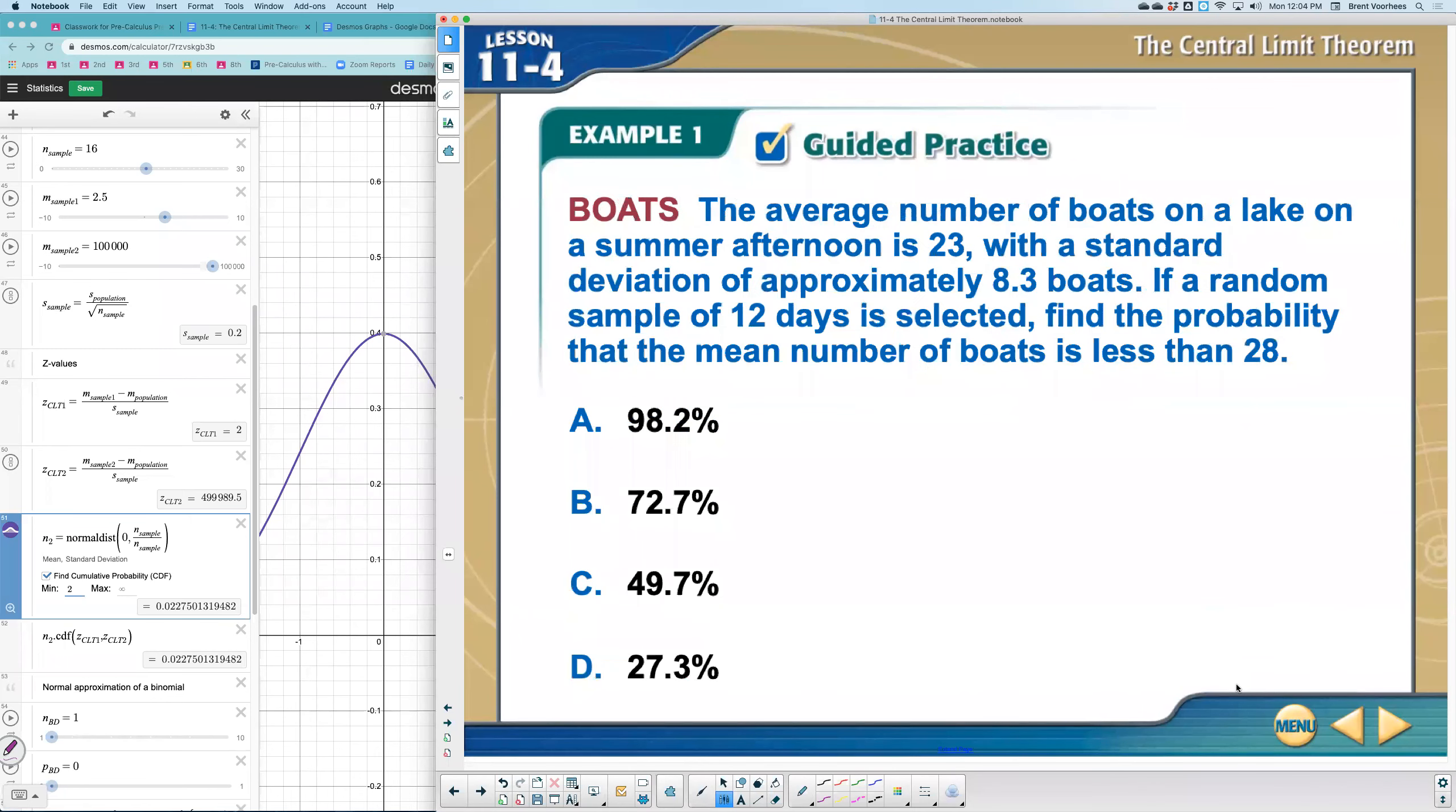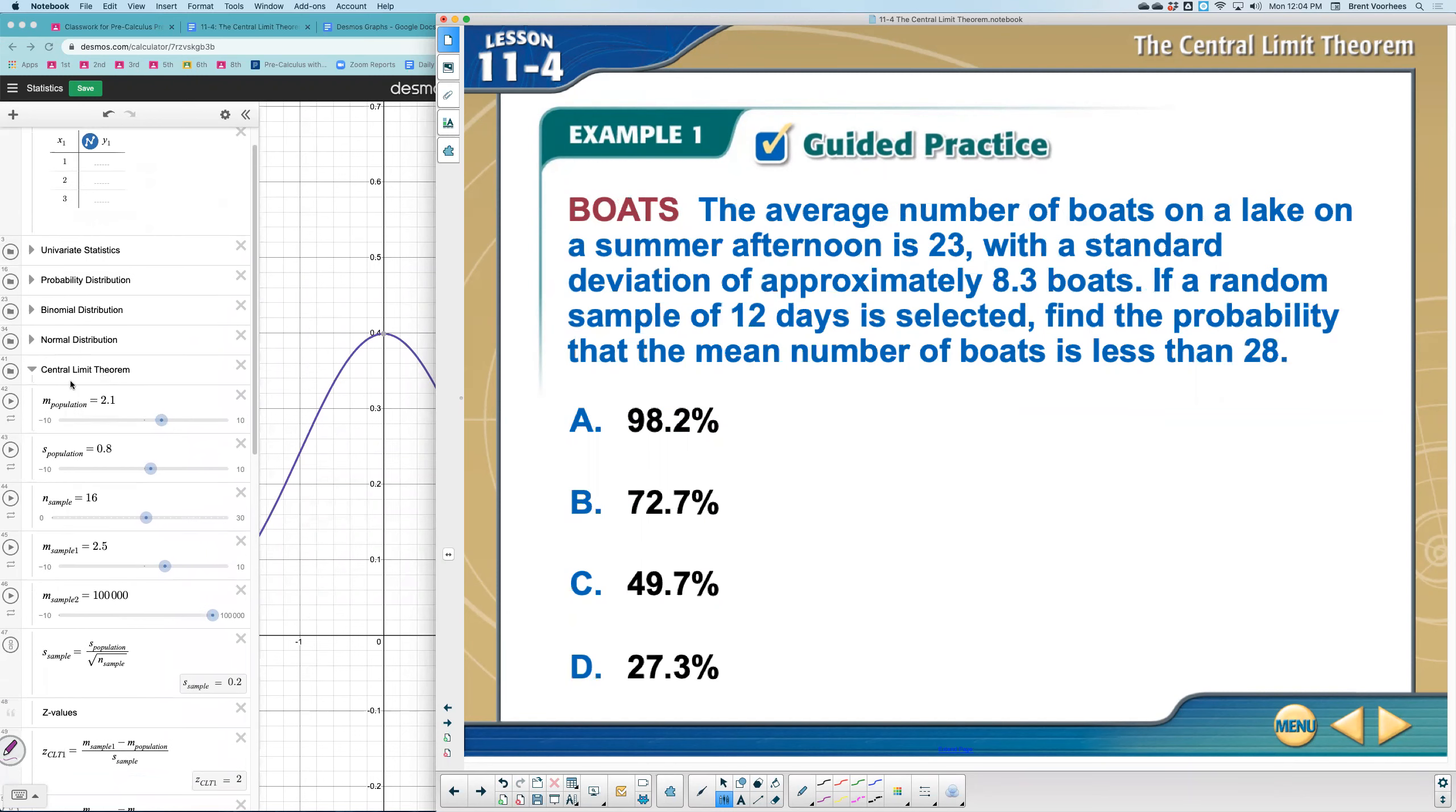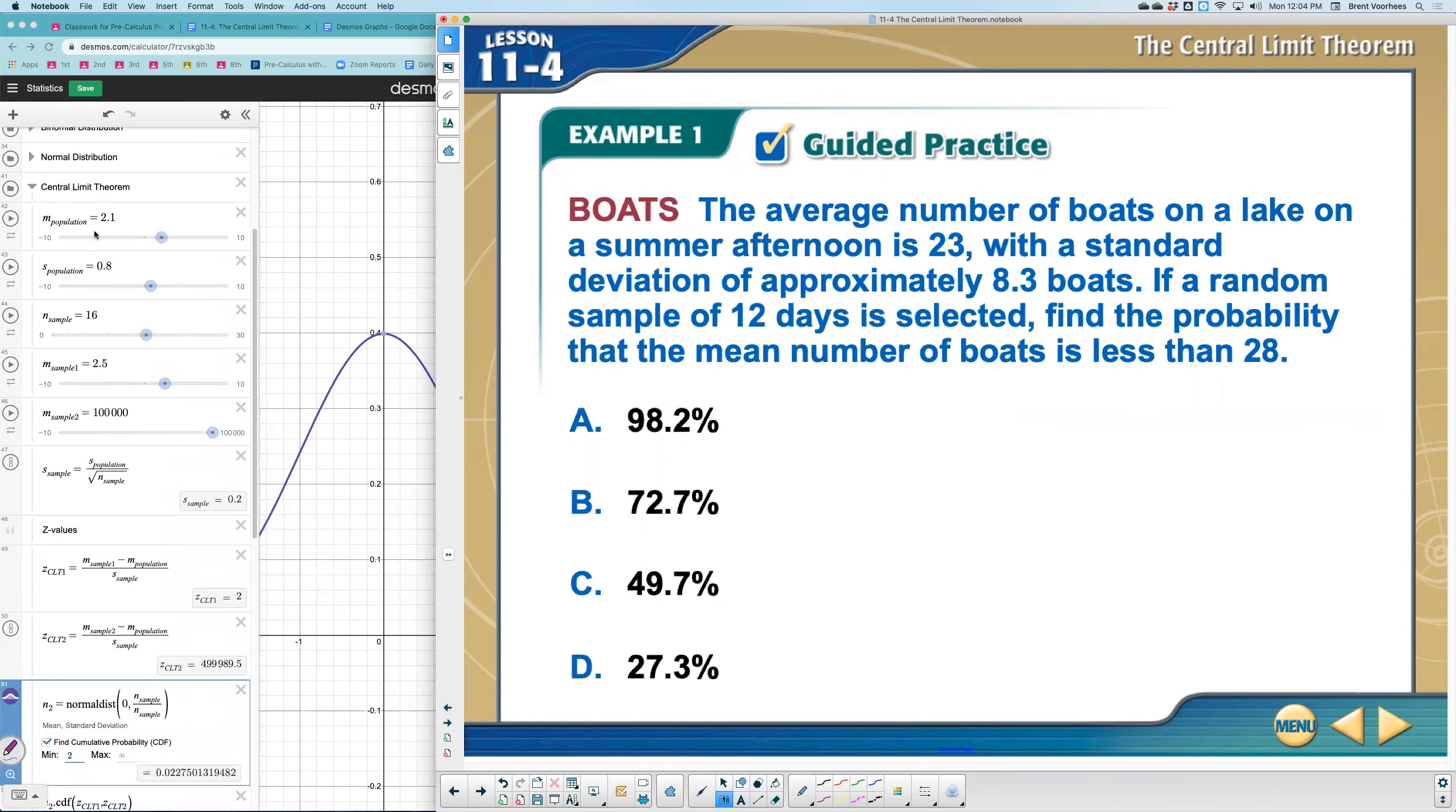Alright, with that I'm going to let you try your first. What I want you to do, so you're not confused, because I started with a normal distribution, we're not going to use a normal distribution, we're going to use central limit theorem. I want you to use central limit theorem and plug in the values to see if you can solve for the probability the mean number of boats being less than 28. Pause the video if you need more time.